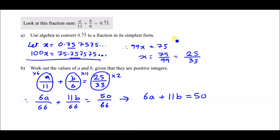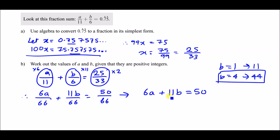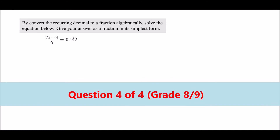Now it's a case of trying positive integer values. Try to maximise 11b below 50: if b = 4, then 11 times 4 = 44. That gives 6a + 44 = 50, so 6a = 6, meaning a = 1. Check: 6 times 1 is 6, and 6 plus 44 is 50. So a = 1 and b = 4.